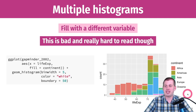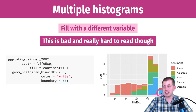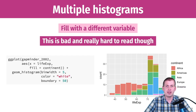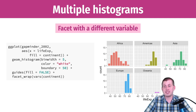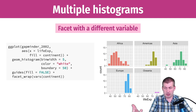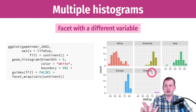Good luck interpreting stacked histograms — they don't share the same baseline at zero, so it's really hard to tell what's happening when they're all stacked on top of each other. What you can do instead is keep the fill for color but also facet, giving you five subplots — one per continent. This is much more interpretable.